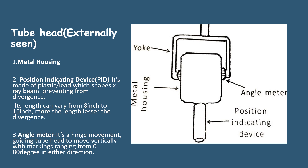The angle meter consists of a hinge movement. It guides the tube head to move vertically, with markings ranging from 0 to 80 degrees in either direction. This is the angle meter.